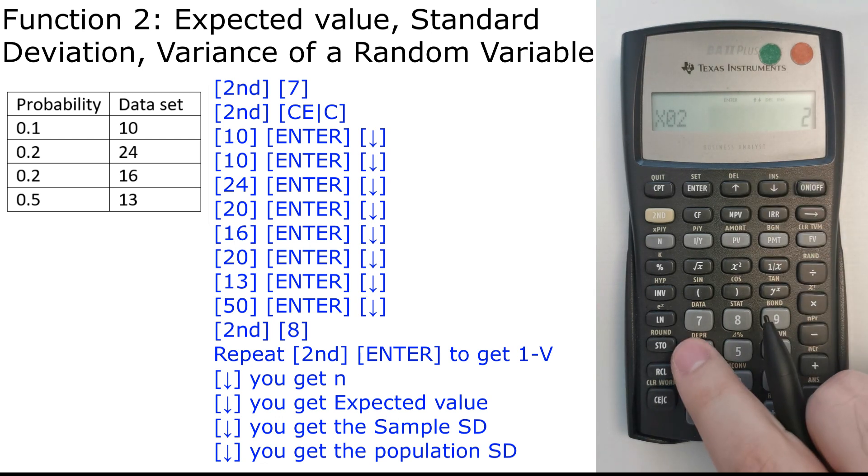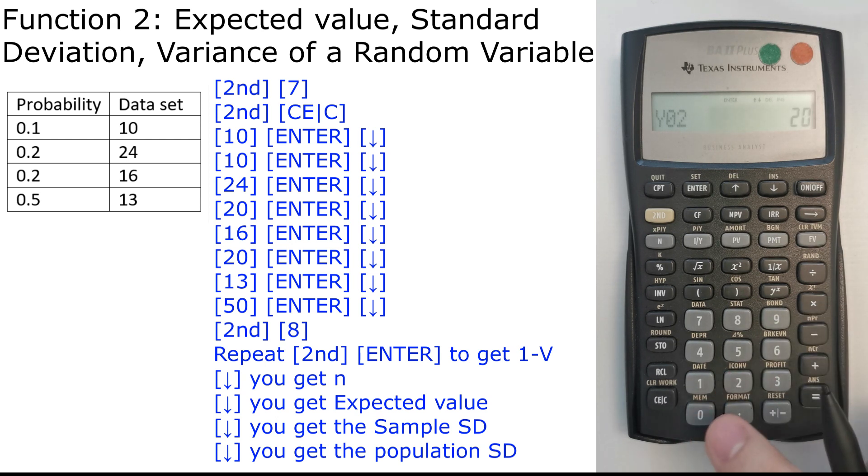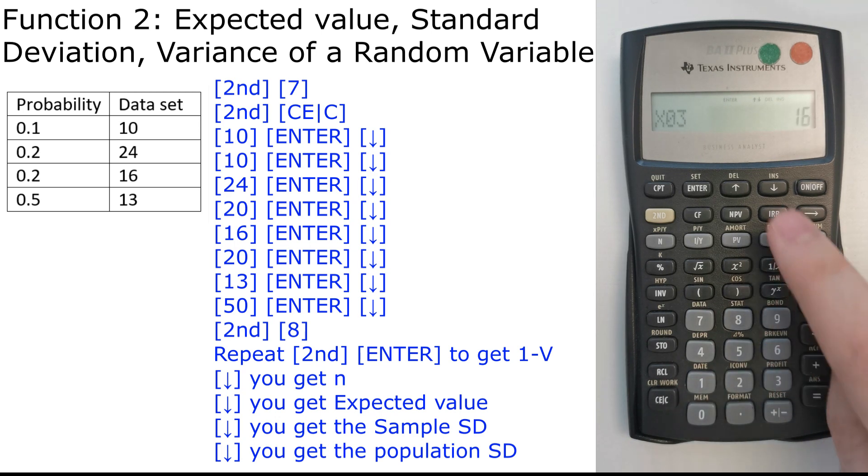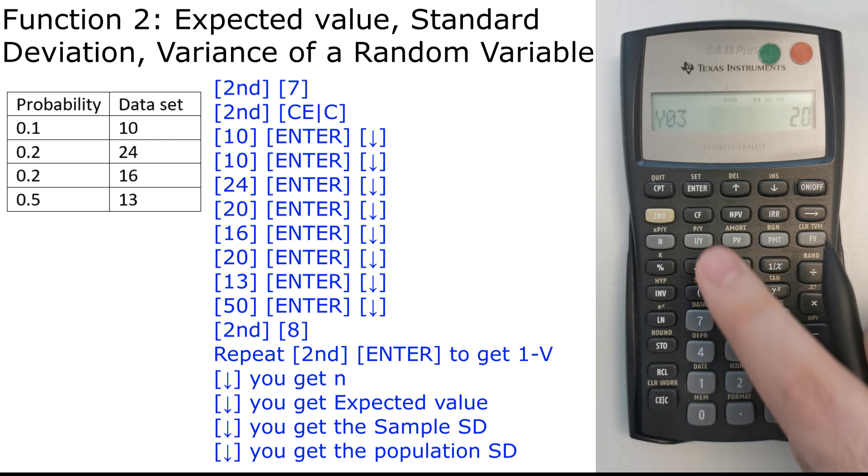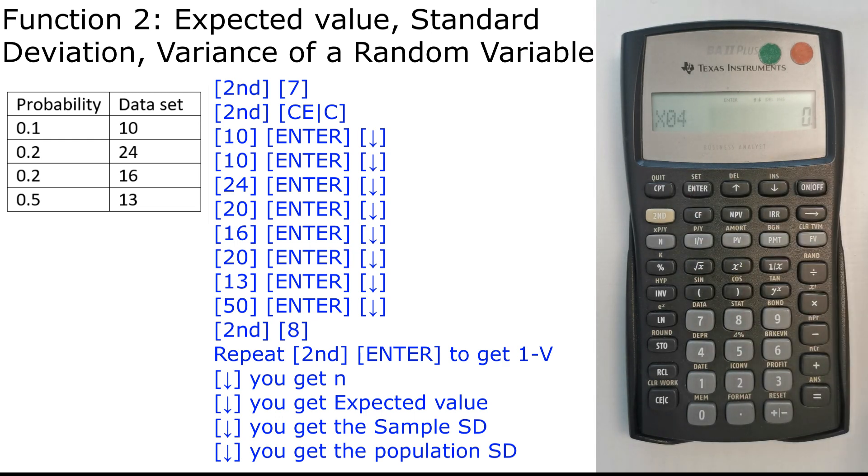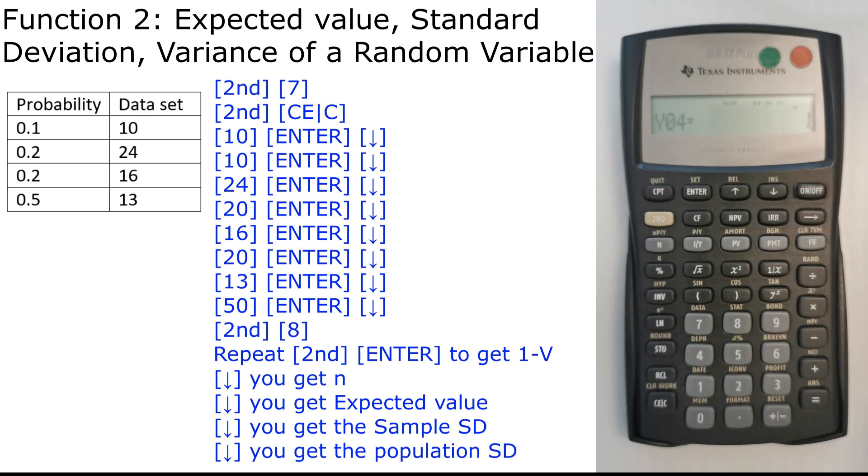The 10 has a probability of 0.1, which is 10%. So we'll input Y01 as 10% also. Enter. X02 is 24. Enter. Then we go downwards, we have Y02 as per the table, it's 20%. So we press 20. Enter. Then X03 is 16. Enter. Then Y03 is also probability of 0.2, which is 20%. So we input 20. Enter. Then we have X04, which is 13. Enter. And finally Y04, which is 0.5, so 50%. Enter.